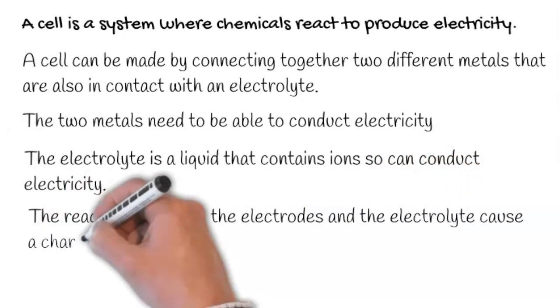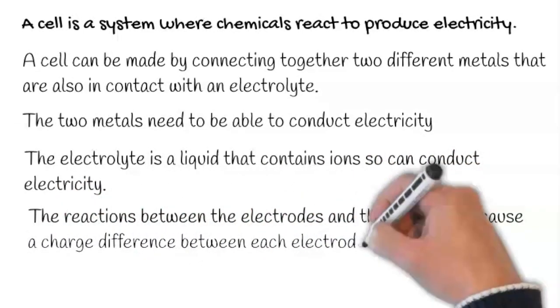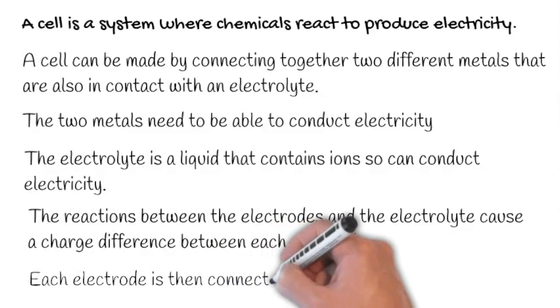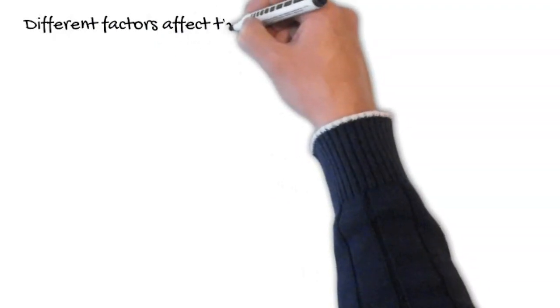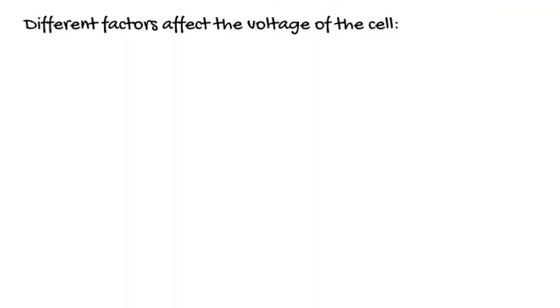The reactions between the electrodes and the electrolyte cause a charge difference between each electrode. Each electrode is then connected by a wire. Different factors affect the voltage of the cell.